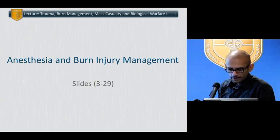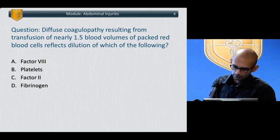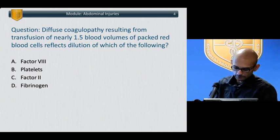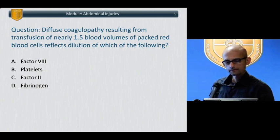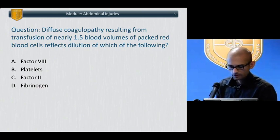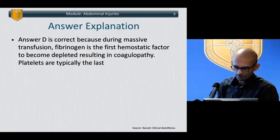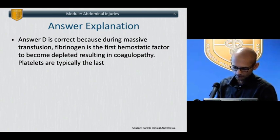Let's move on to anesthesia and burn injury management. Diffuse coagulopathy resulting from transfusion of nearly 1.5 blood volumes of packed red blood cells reflects dilution of which of the following? The correct answer is fibrinogen. After nearly 1.5 blood volumes, you start to develop a hyperfibrinogenemia, and that's where you start developing your diffuse microvascular bleeding tendency with large-scale blood transfusion. With 2.5 blood volumes, you start depleting factors, and then you start depleting platelets, in that order.